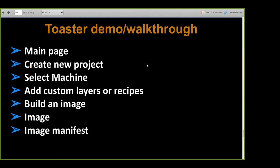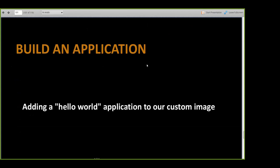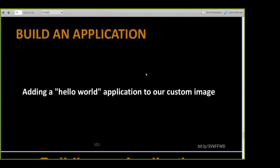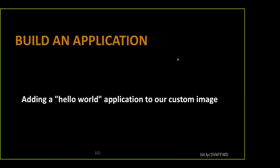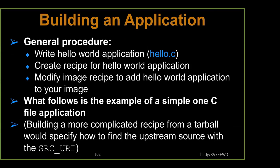Let's talk about adding an application to our image. We have our custom image with psplash, dropbear, and the core-image-minimal equivalent via package-group-core-boot. The general procedure is: write the hello world app, create a recipe (a .bb file) for it, then modify the image recipe to add the hello world application using plus-equals on IMAGE_INSTALL.